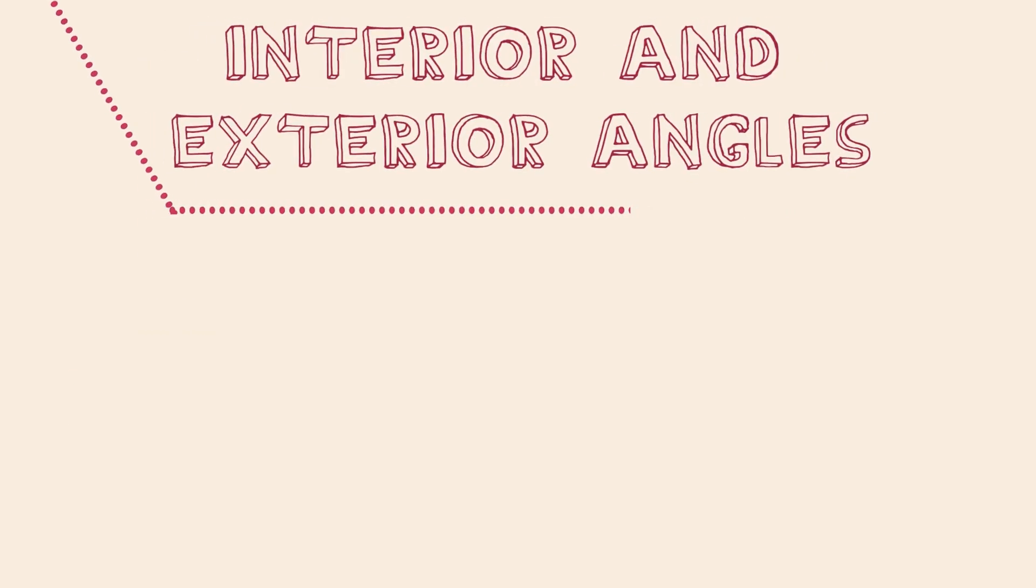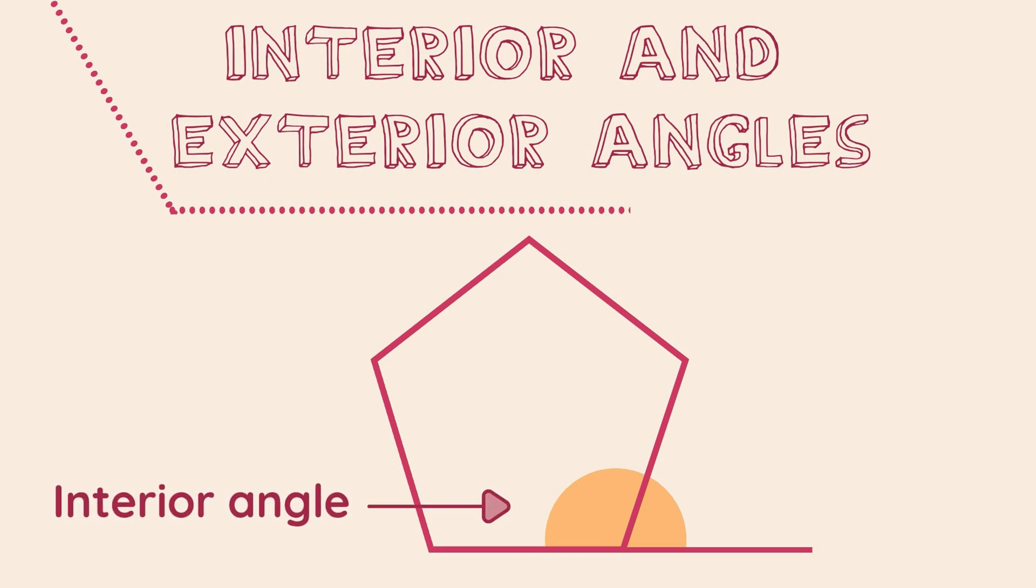Firstly, let's look at this polygon. Here we have an interior angle, which is inside the shape. And here we have an exterior angle. Exterior angles are outside of the shape. The interior and exterior angle will form a straight line.